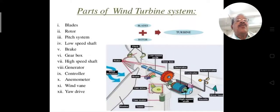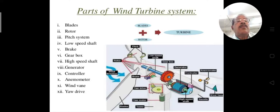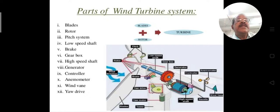Now, the various parts of the wind turbine. The main parts are: blades, rotor, pitch system, low speed shaft, brake, gearbox, high speed shaft, generator, controller, anemometer, wind vane, and yaw drive. These are the twelve different parts.